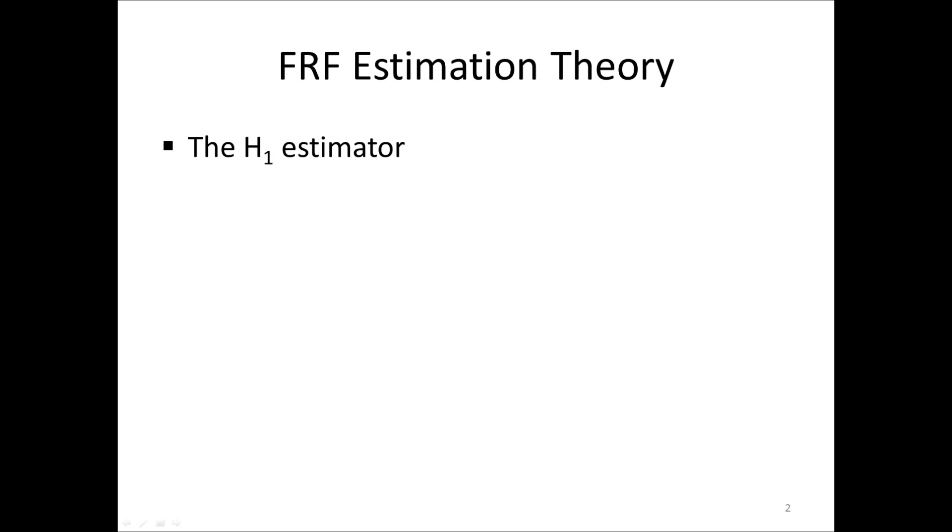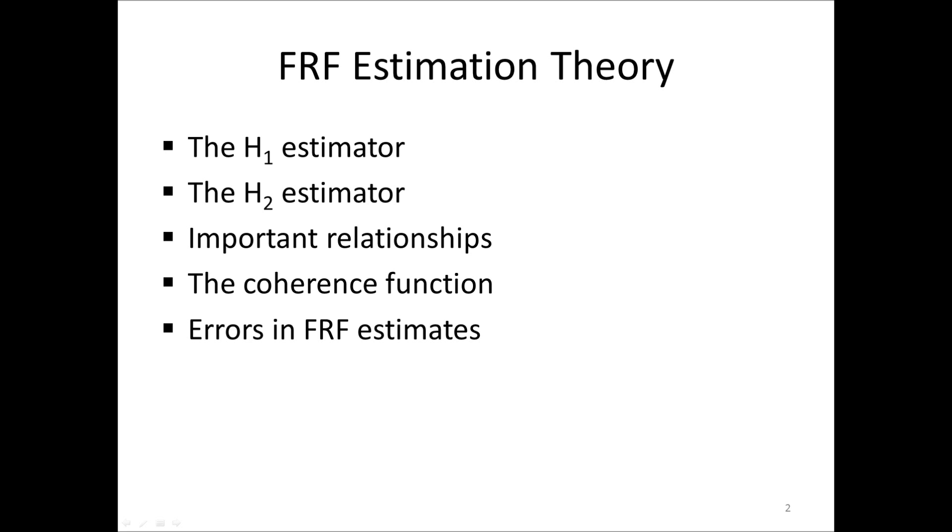This lecture will cover the two different estimators for single input-single output FRFs called H1 and H2. We will also talk about some important relationships for linear systems. Then we will discuss the coherence function, an important function that can be used to assess the quality of the FRF estimates. We will talk about the errors in FRF estimates and we will discuss the concept of coherent output power. Finally, we will discuss the interpretation of the coherence function.